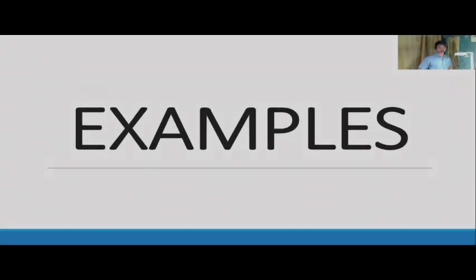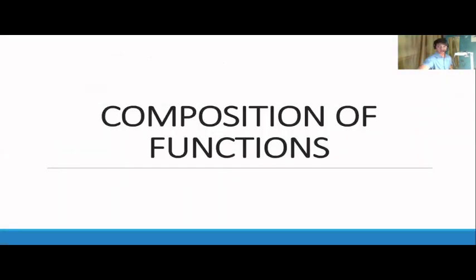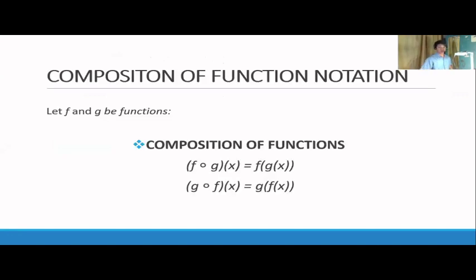We are done with examples for operations on functions. Let's move on to composition of functions. The composition of f and g is denoted by (f∘g)(x) = f(g(x)), and (g∘f)(x) = g(f(x)).